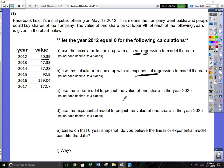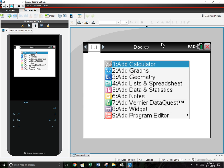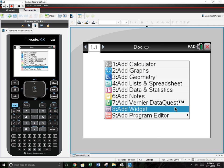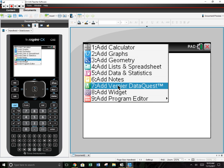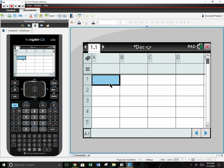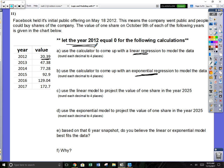On your calculator, open it up, hit the home button. Let's do number one, a new document, and we are going to add a list. Now in your list it's important that you title them. Column A, you can title it year, and then column B value or money. Now it says let the year 2012 equal zero.